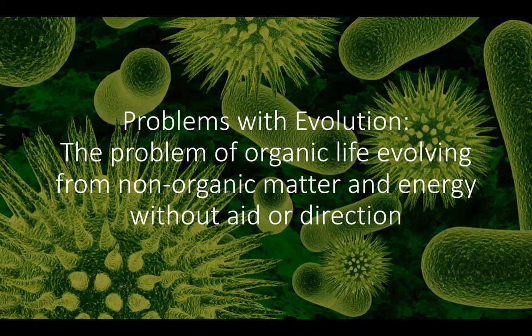There's yet another problem with evolution, and that is the problem of organic life evolving from non-organic matter and energy without aid or direction. According to Michael Behe in his book Darwin's Black Box, the evolution of even the simplest life form is so fantastically improbable, given the complex and integrated nature of the so-called simplest organic life form, that it defies reasonable explanation and begins looking more like an ideological commitment and less like a sensible argument.